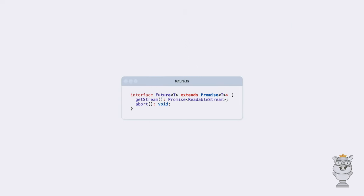Unless you configure the request with the reload cache option — with this option, the request will once again be sent to the request handlers and your app will await the response. Or you can configure the request with the background reload cache option. With this option, the cached response will be returned immediately, but the request will still be sent to the request handlers in the background. The cache and your UI will be updated with the new data once the new request resolves. When the user changes data by adding, updating, or deleting records, the new data is merged into the existing cache automatically, while requests to save the changes are sent in the background.